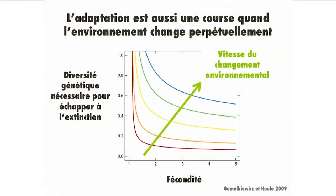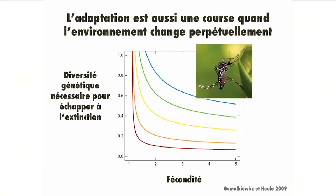On this graph, you can see the forecast of an adaptation model to a changing environment. It shows the critical genetic diversity below which the population cannot escape extinction, depending on the fertility of the population and the speed of environmental change. The quicker the environment changes, the more difficult it is to escape extinction.